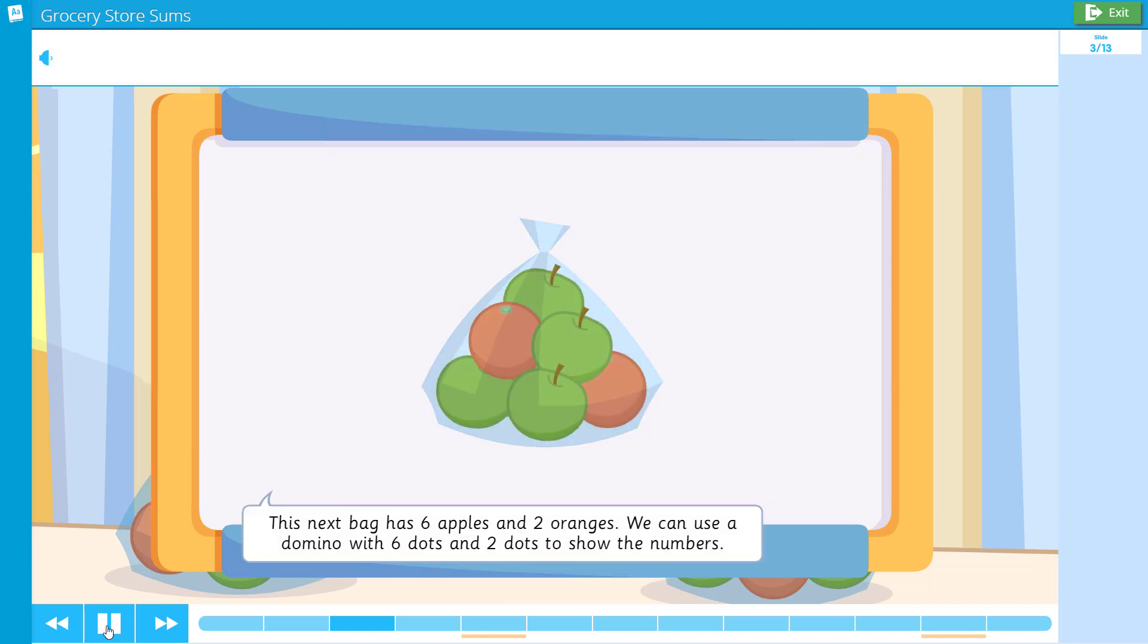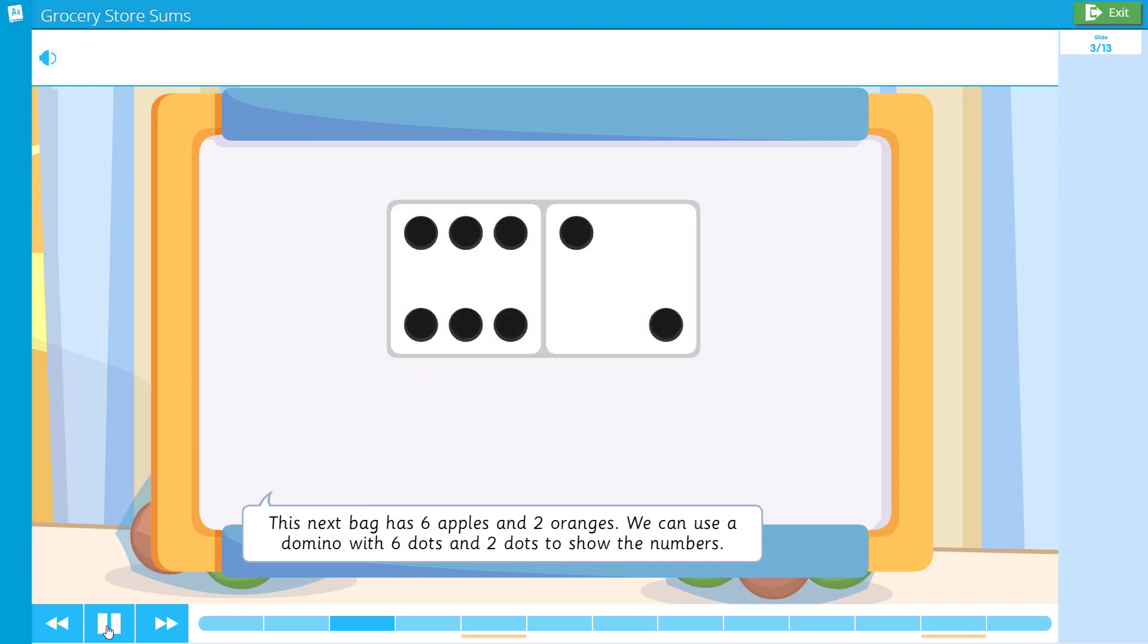This next bag has six apples and two oranges. We can use a domino with six dots and two dots to show the numbers. Six and two more make eight.